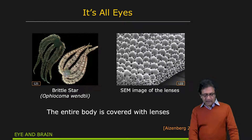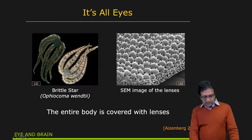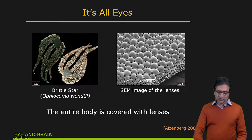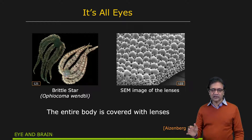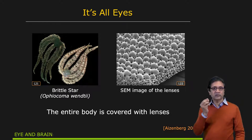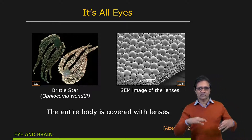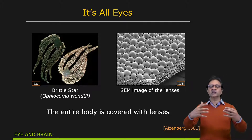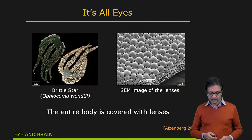And then it was discovered that the entire body of the brittle star is just covered with lenses. This is a scanning electron microscope image showing a small piece of the body. Each one of these bumps is a lens made of transparent calcite, roughly about 1/20th of a millimeter in diameter. Each lens focuses light from a cone in the scene onto one nerve bundle. So the entire body is acting like a flexible camera, able to get a spatial distribution of the light around it — just absolutely amazing.